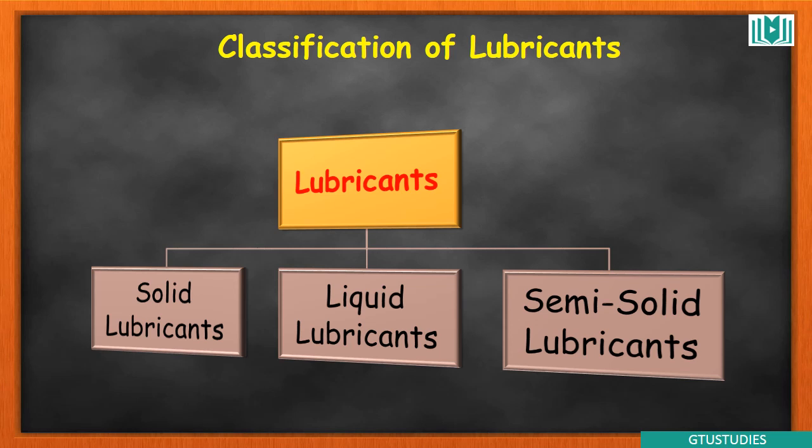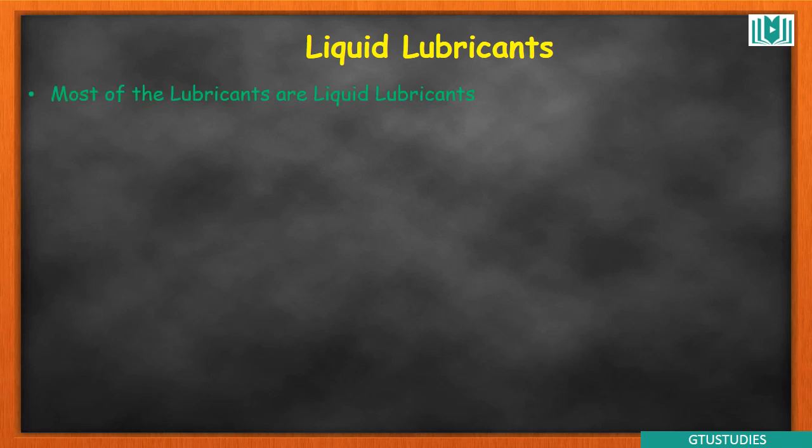The three types are: first, solid lubricants which come in solid form; second, liquid lubricants which come in liquid form; and third, semi-solid lubricants which are neither fully solid nor liquid — for example, grease. Among these, liquid lubricants are most commonly used, so we will start with liquid lubricants. Under liquid lubricants, there are mainly four subtypes.